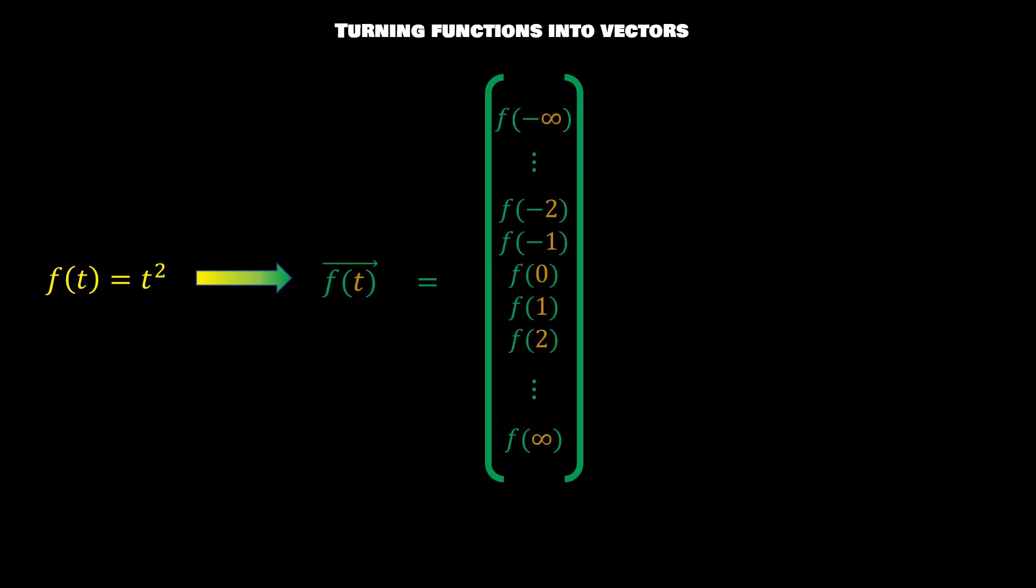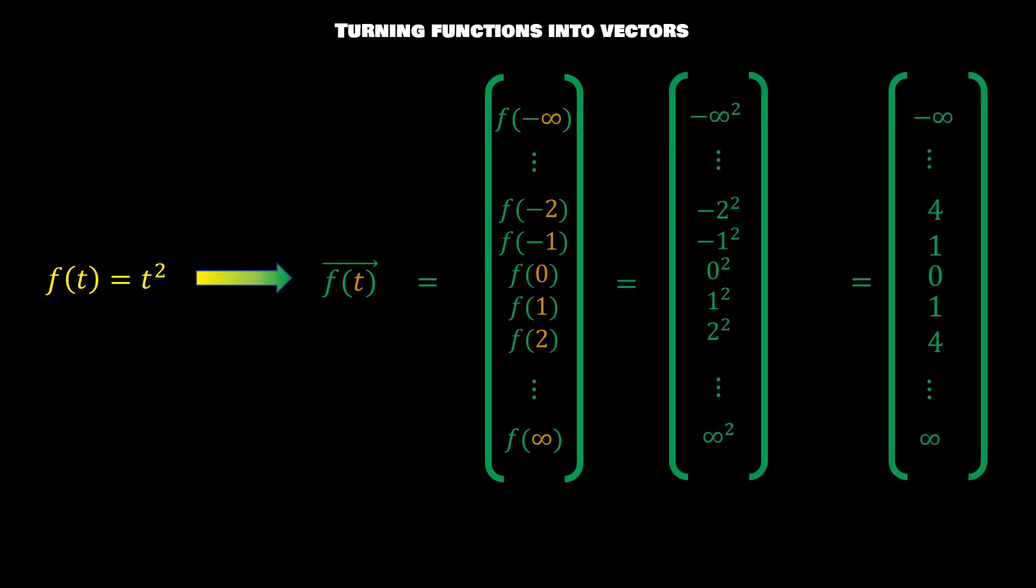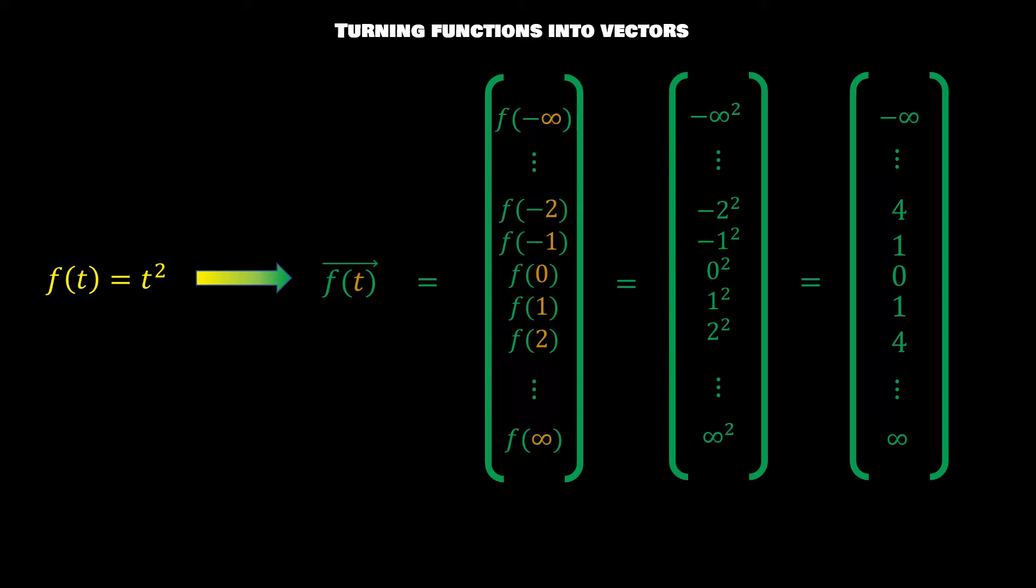So let's start with this very innocent-looking function, f equals t squared, and let's say out of pure boredom we wanted to try and turn this into a vector. So maybe how we would do that is, for every component in the vector, we take one value of f. So here, I have an infinitely long vector starting from f(-∞) and going all the way to f(∞). So very theoretical, mysterious vector goes on for infinity, but it does contain the values of f equals t squared. And here we go by one time step as we go down the vector, so time is increasing as we go down the vector.